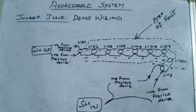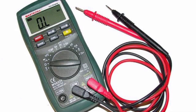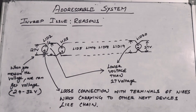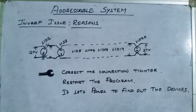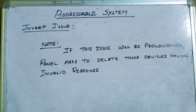Invalid response can happen because of loose terminations in the devices. Normally, a device should take the SLC voltage between 24 volts to 32 volts and deliver the same to other devices. If any device takes the SLC input at the appropriate voltage but delivers lower voltage to other devices, those downstream devices will not communicate with the panel. Go to the first device shown on the panel display, check the wiring termination, clear the trouble, and restart the panel.